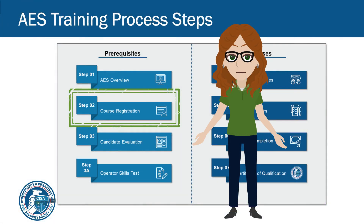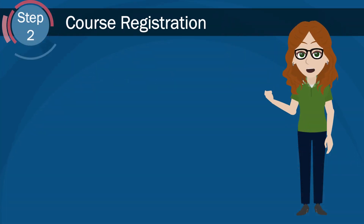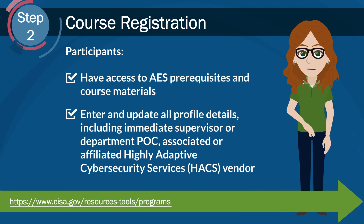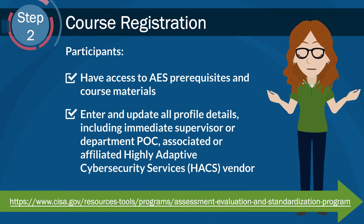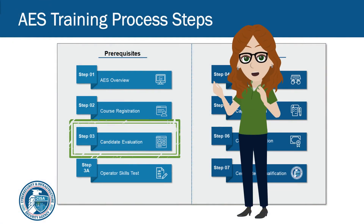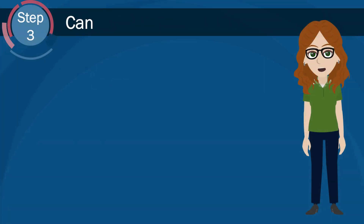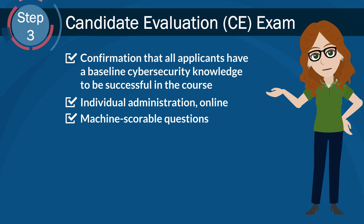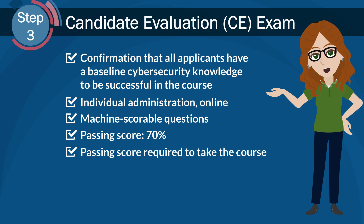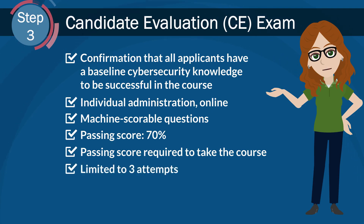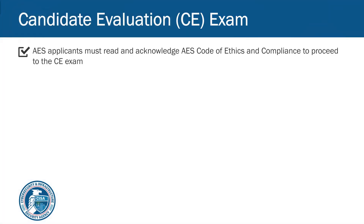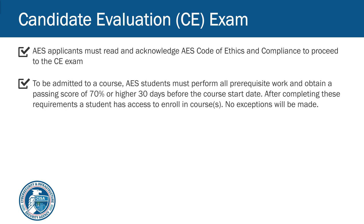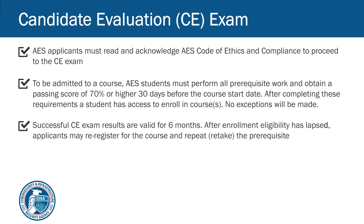The next step is course registration. After you view the AES program overview video, visit the AES webpage for course registration instructions. Step 3 is Candidate Evaluation. To confirm that you have a baseline cybersecurity knowledge to be successful in an AES course, you must complete and pass the Candidate Evaluation, or CE exam. You have several attempts to pass the multiple-choice question test with a score of 70% or higher. The CEE is a mandatory step applicable to every AES assessor role. Before taking the CEE exam, you must read and acknowledge the AES Code of Ethics and Compliance. After you pass the CEE, your results are valid for six months.